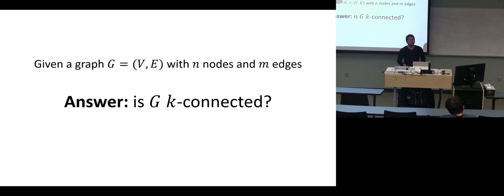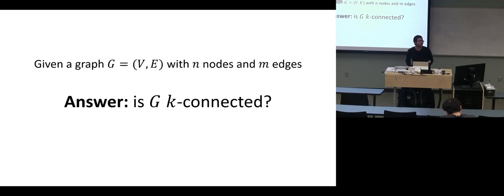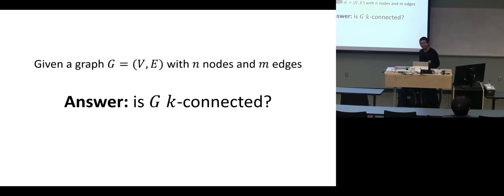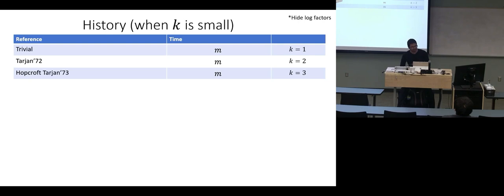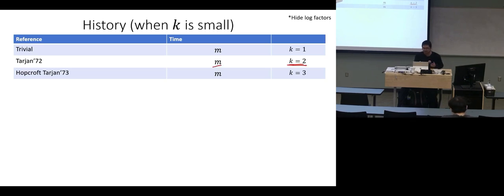The natural question is: given a graph, is it k-connected or not? If k is 1, you can check in linear time — just do BFS or DFS. How about k=2? It turns out that a long time ago, about 50 years ago, Bob Tarjan showed you can check if the graph is 2-connected in linear time. And even when it's 3-connected, you can check it in linear time as well.